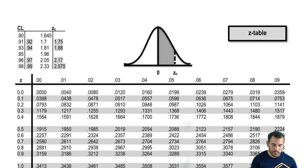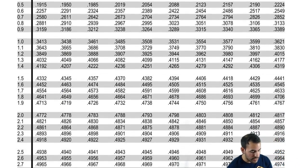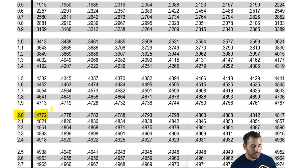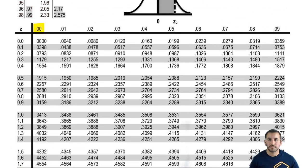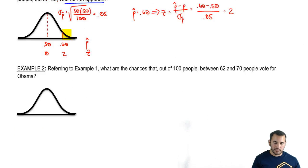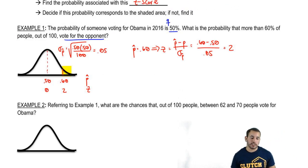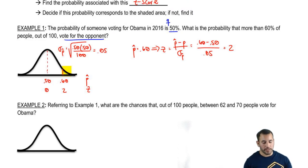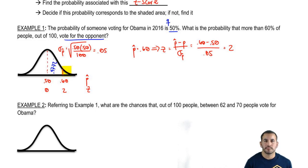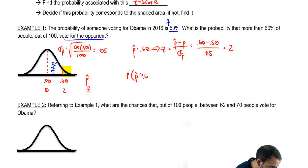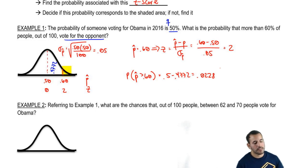Let's look that up in our table. A Z-score of 2.00 gives me 47.72. That corresponds to the area between 50% and 60% of people voting for the opponent — 0.4772. The probability of P-hat being greater than 0.60 is 0.5 minus 0.4772, which gives us 0.0228. There's about a 2% chance that more than 60% of people will vote for the opponent.